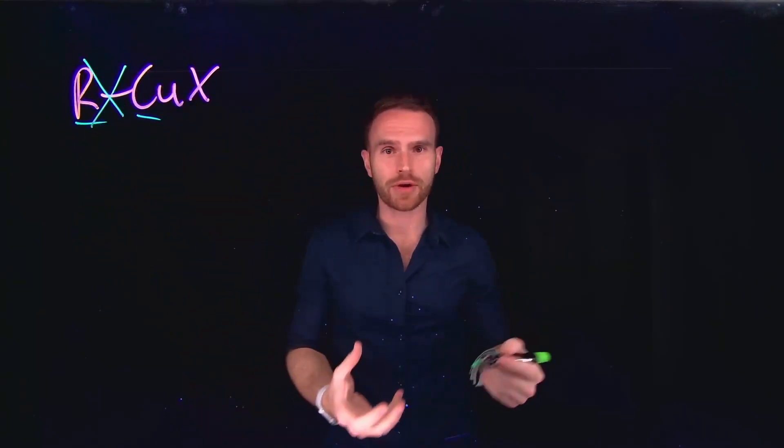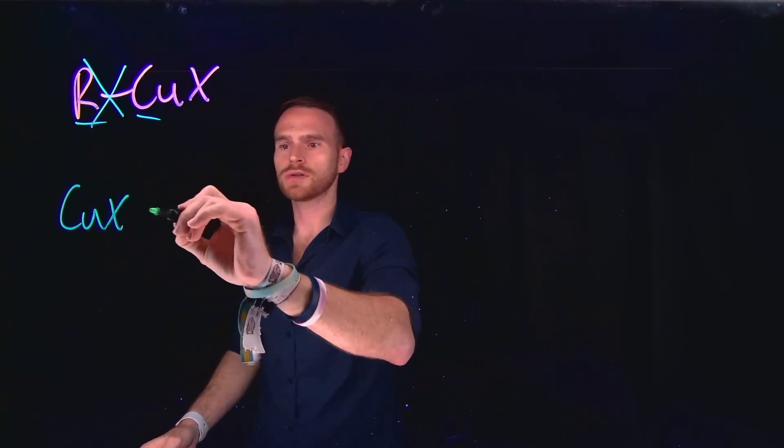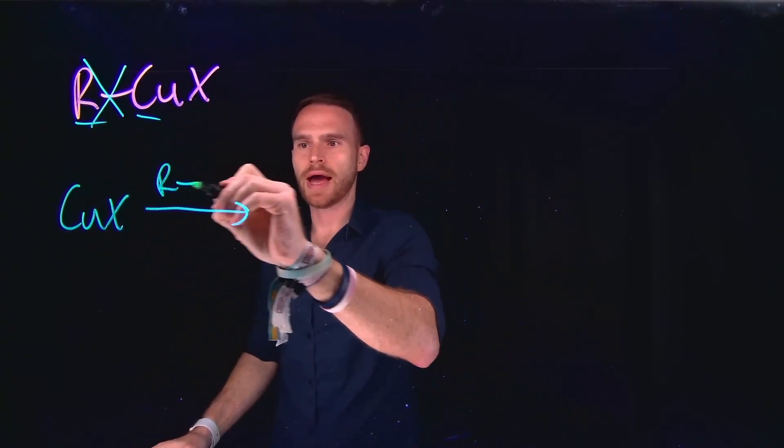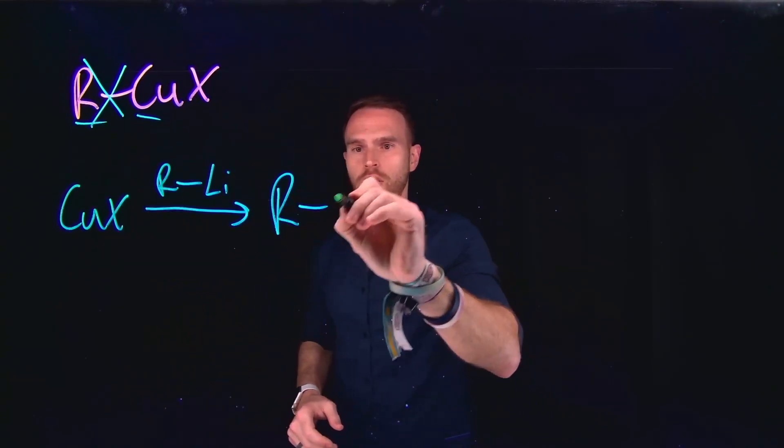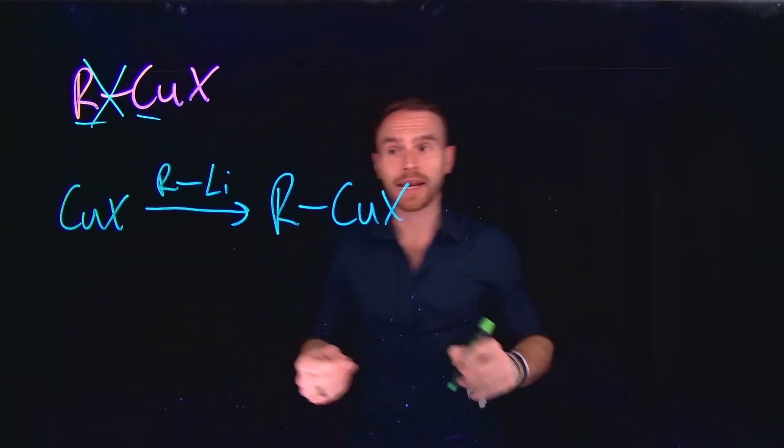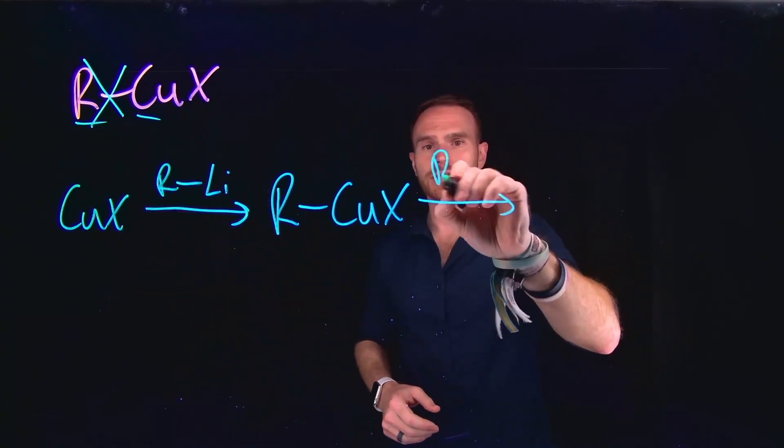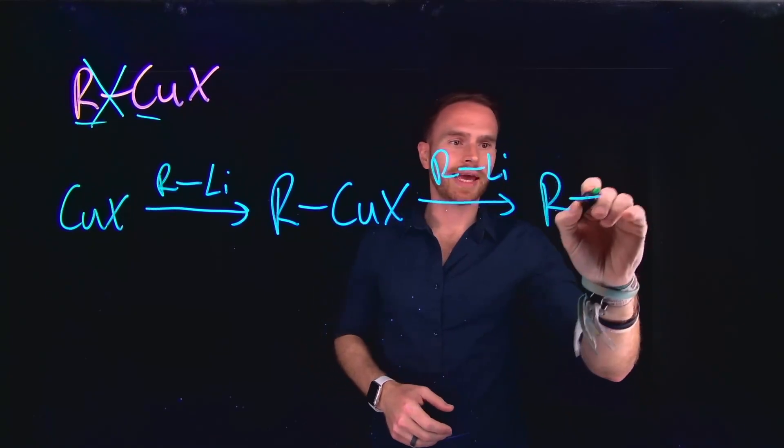However, what we can do is take a copper salt, and the way that we generate this organo-copper compound is to add an organo-lithium compound to create the new R group bound to copper. And if we add a second equivalent organo-lithium reagent, then this allows us to generate what are called organo-cuprates.